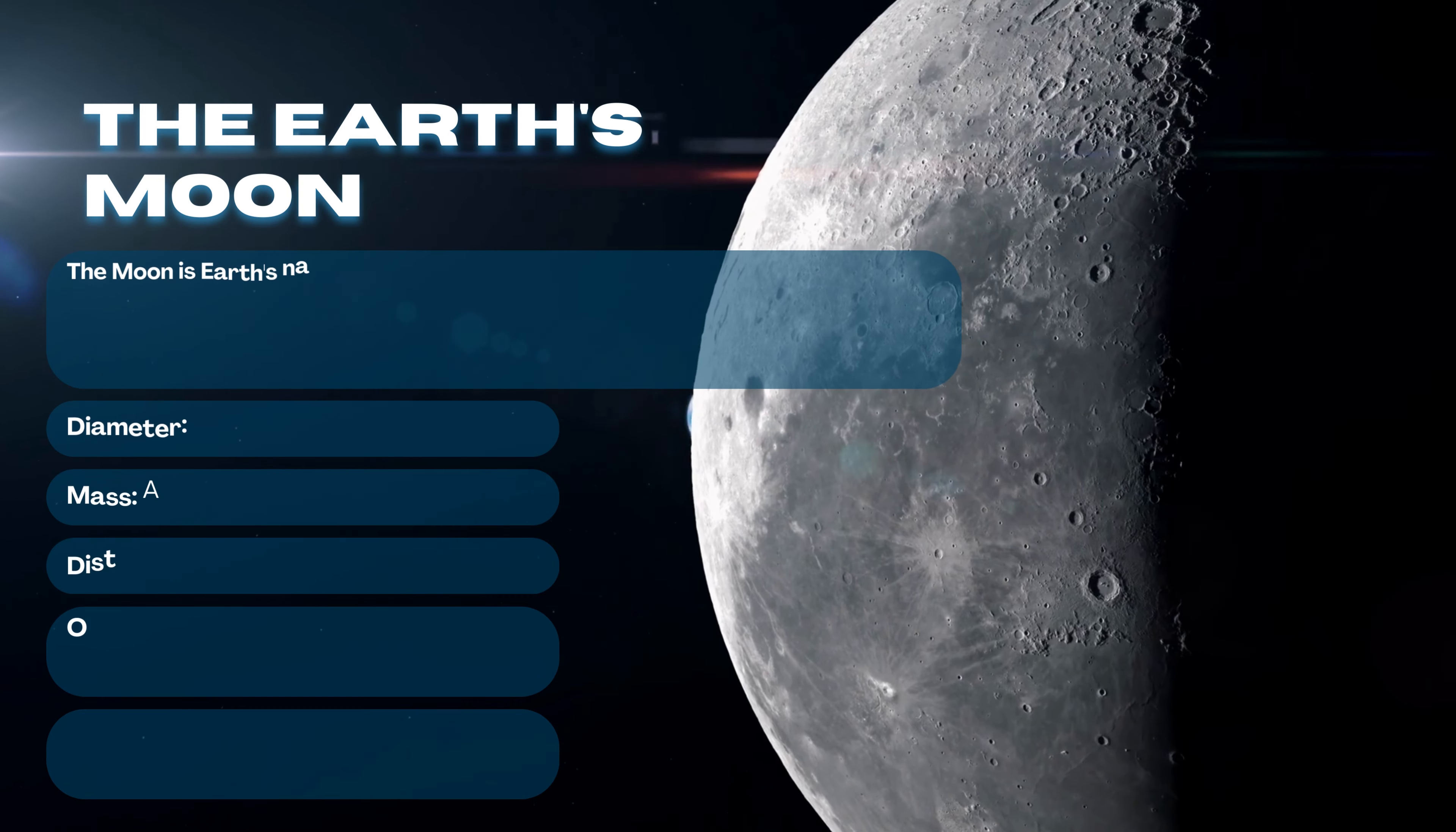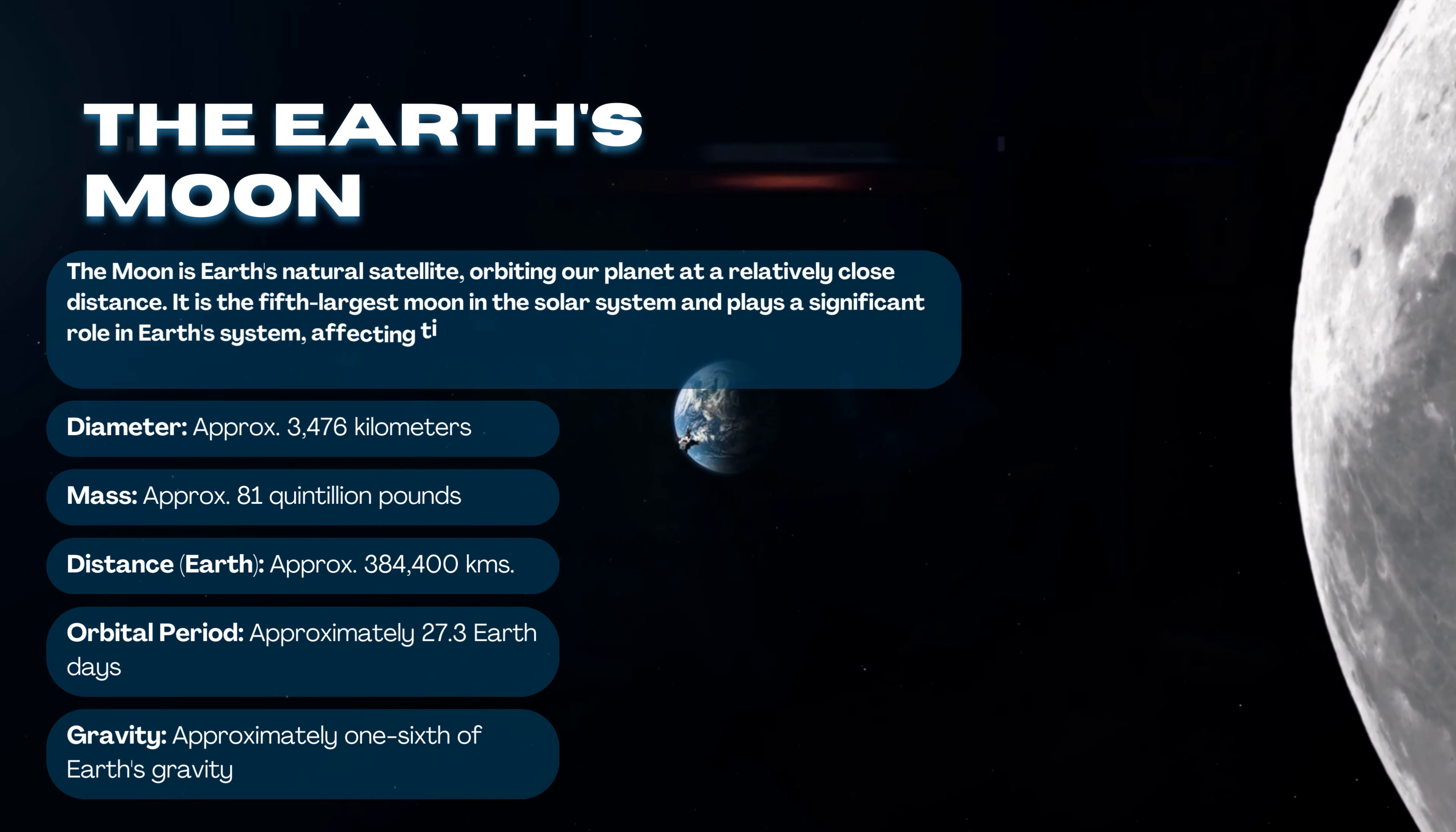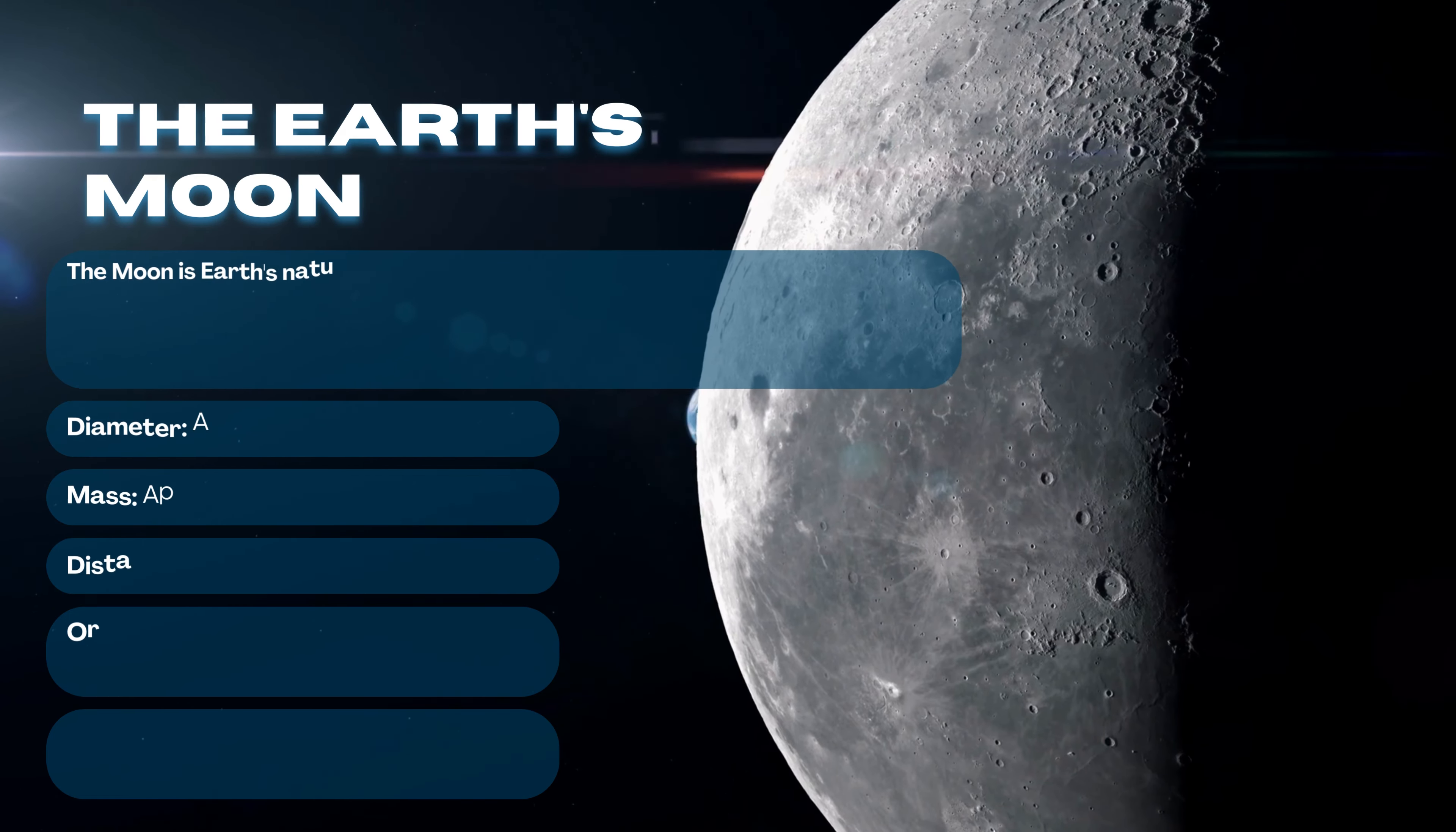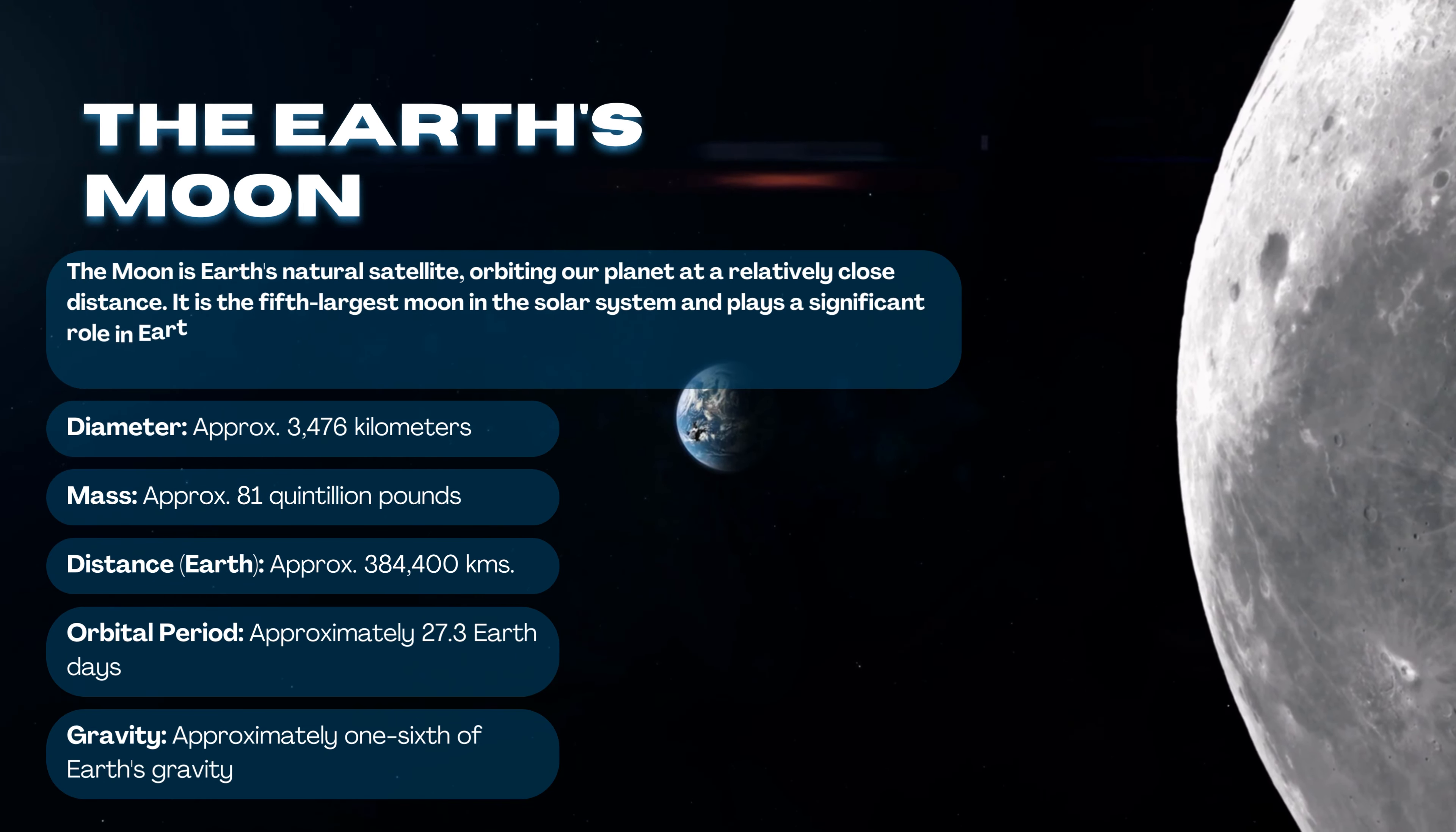The Earth's moon. The moon is Earth's natural satellite, orbiting our planet at a relatively close distance. It is the fifth largest moon in the solar system and plays a significant role in Earth's system, affecting tides, lighting up the night sky, and even influencing cultural and scientific pursuits.